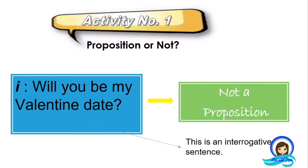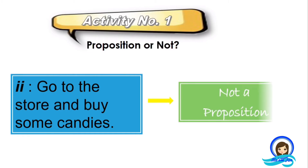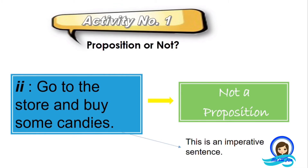What about this: Go to the store and buy some candies. The answer — it is not a proposition. Why? It's because this is an imperative sentence. It is giving you a command to go to the store and buy some candies.